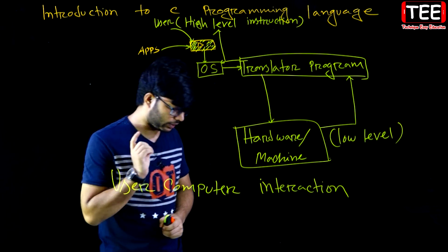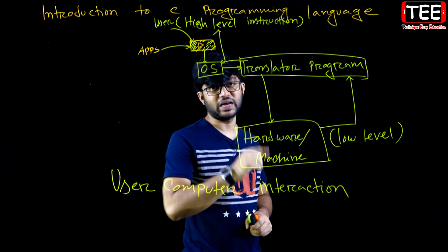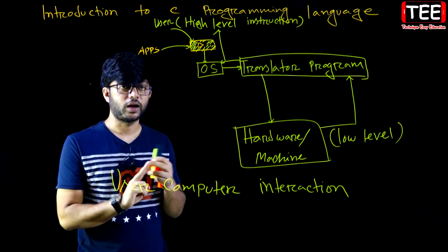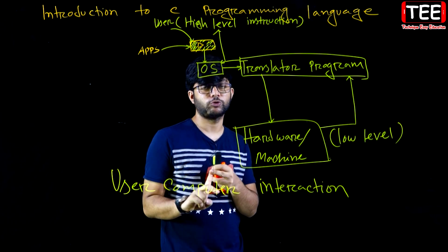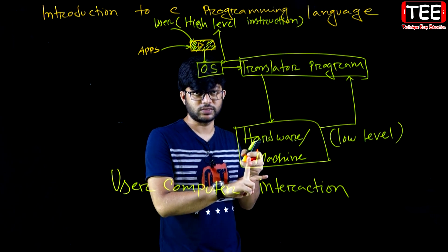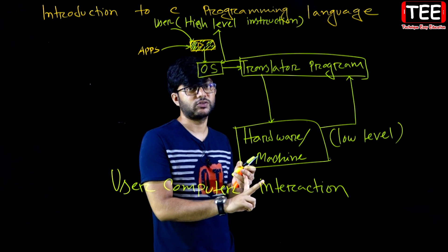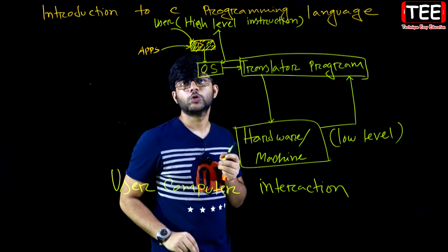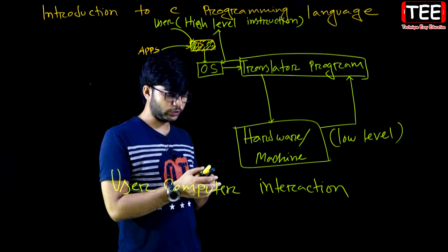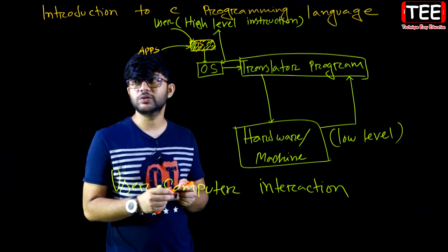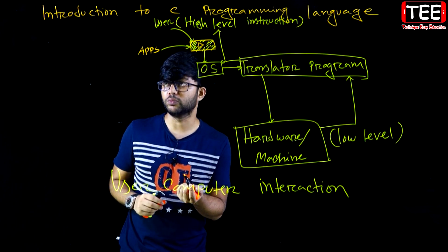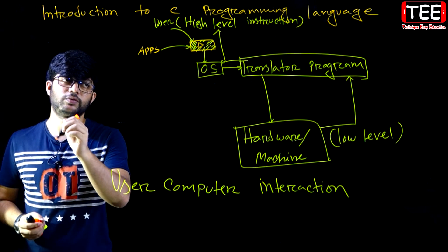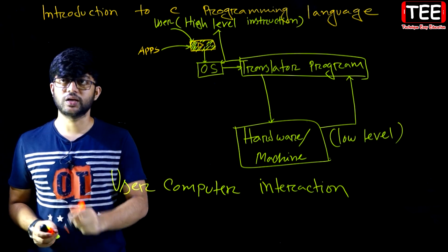So we know this part. Now the classification — classification of programming language — this is divided into two parts: low level and high level. Low level had two things: machine language and assembly language. High level had structural language and object-oriented programming language. Now we will speak in detail about machine language.